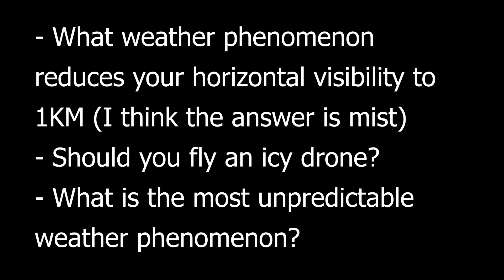Here were a couple of trickier, more specific questions I had to look around to find. What weather phenomenon impairs horizontal visibility to one kilometer? I'm pretty sure the answer was mist, but not fog — double check me on this, because they don't let you see your answers afterwards. Should you fly an icy drone? Probably not. What is the most unpredictable weather phenomenon? I believe the answer was turbulence — it's basically a bunch of wind forces acting against each other in an unpredictable way.